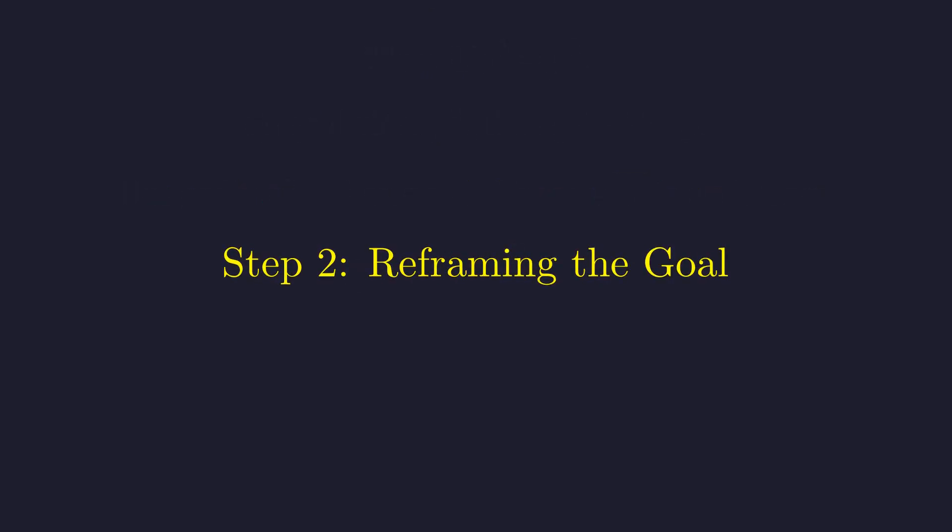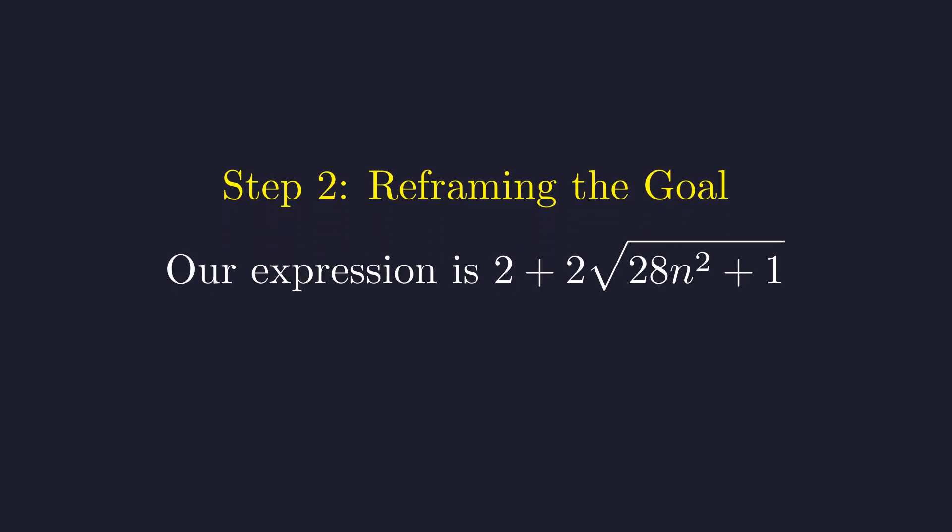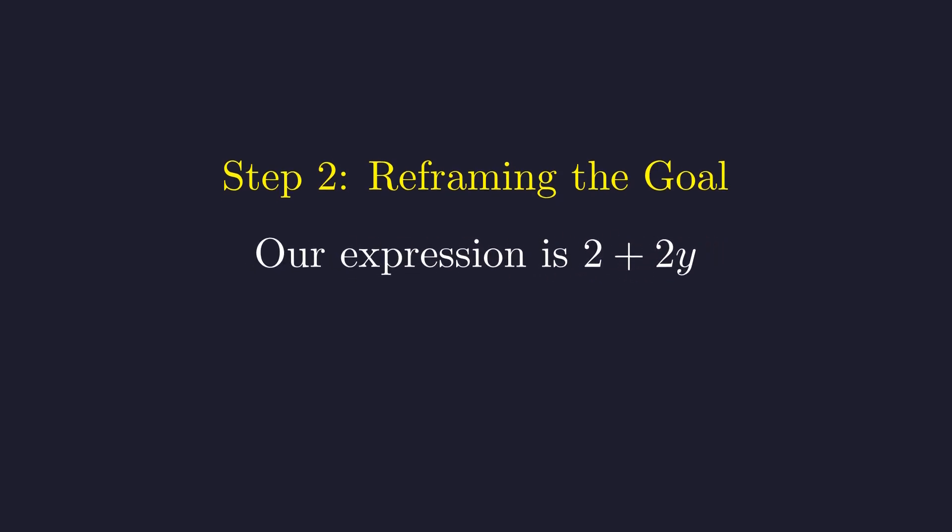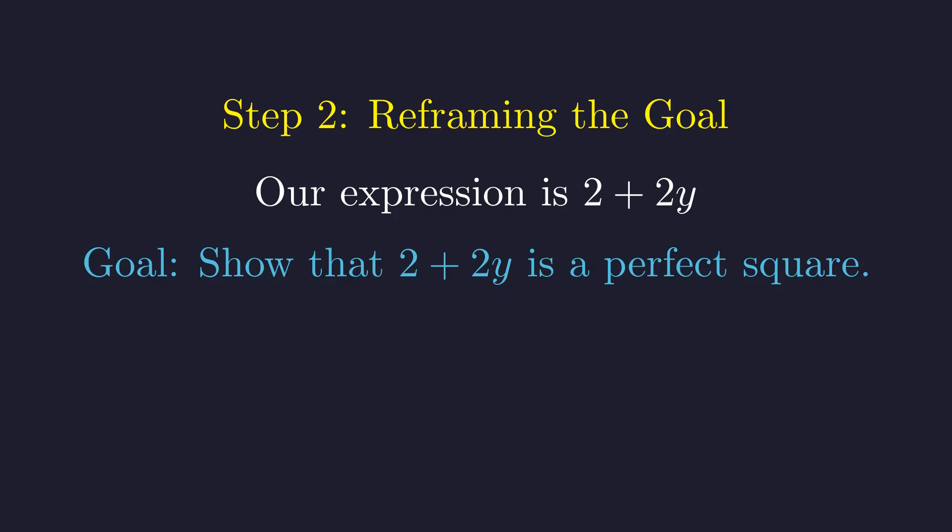Let's use this new insight to restate our original goal in simpler terms. We've established that 28n² plus 1 is a perfect square, which we called y². Since y is positive, we can substitute y² into the expression. The square root of y² simplifies to y. The expression simplifies to 2 plus 2y. Thus, our goal has been reframed. We must show that 2 plus 2y is a perfect square, given the constraint from Pell's equation.